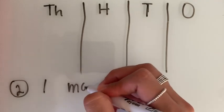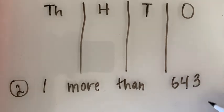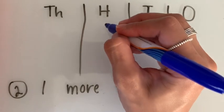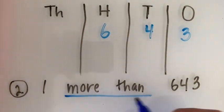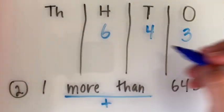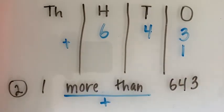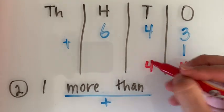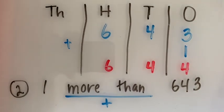Our second example states one more than 643. We're going to start again by placing 643 on our place value chart. Then more than, remember, stands for addition. And our one is going to be plotted in its appropriate place value, which is in the ones place. We're going to add the ones place, the tens place, and hundreds. And our answer is 644.